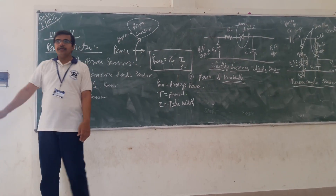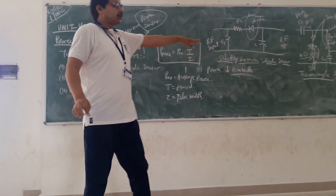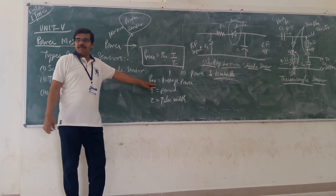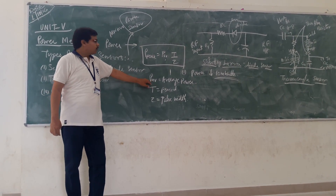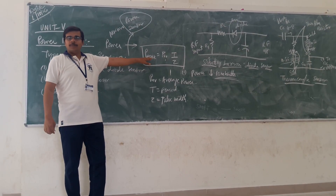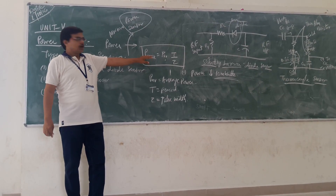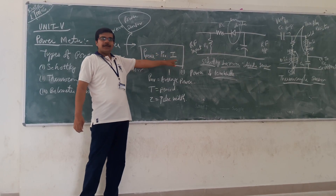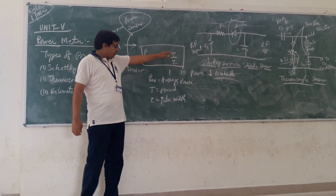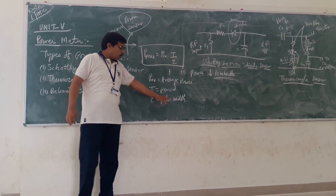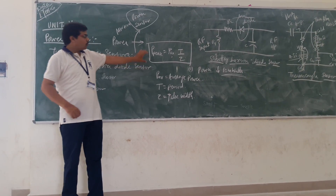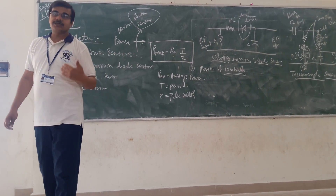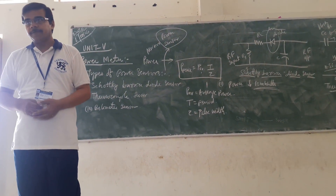In the case of this sensor, if you know the average power, you can calculate the peak power. Peak power equals average power divided by the duty cycle, where the duty cycle is the pulse width divided by the period. From this, you can calculate how much the peak power will be.